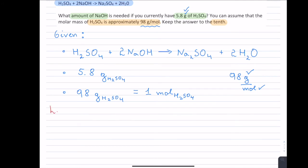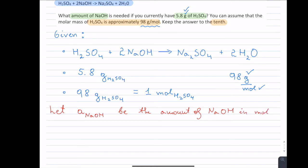Depending on who is marking or what you're doing this for, you often want to let the reader know what you're solving for. We want to solve for the amount of NaOH — just counting moles. The variable you use is up to you: A for amount, or N for number of moles. So let A (with subscript NaOH) be the amount of NaOH in moles.